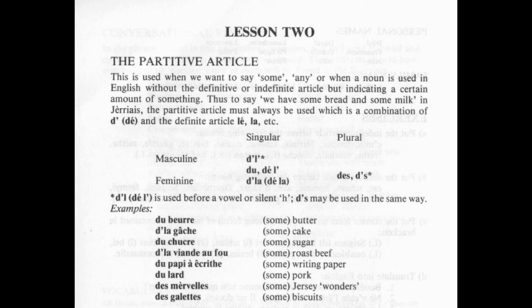Thus, to say 'we have some bread and some milk' in Jèrriais, the partitive article must always be used, which is a combination of 'd' and the definite article: le, la, etc.